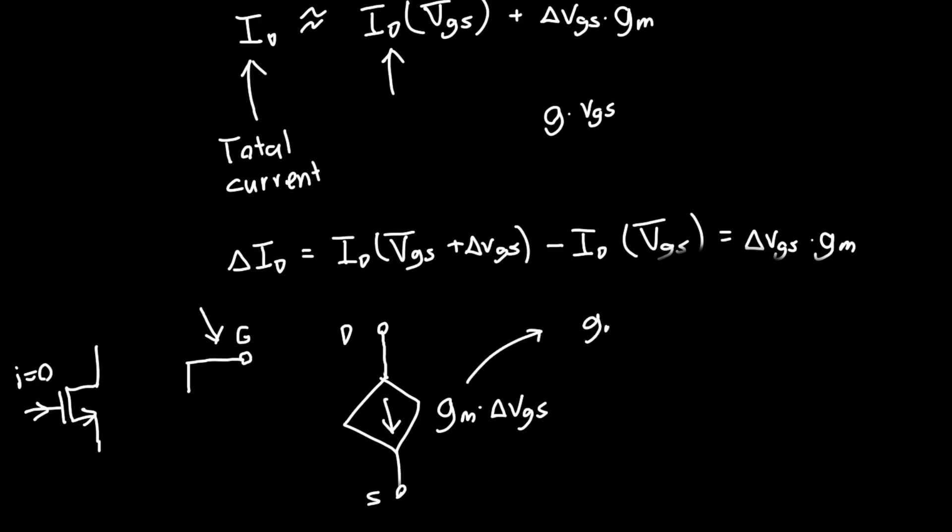And just so that we're explicit, GM is equal to the derivative of drain current with respect to VGS, which is equal to KN times (VGS - VT). Awesome. We have our linear model.